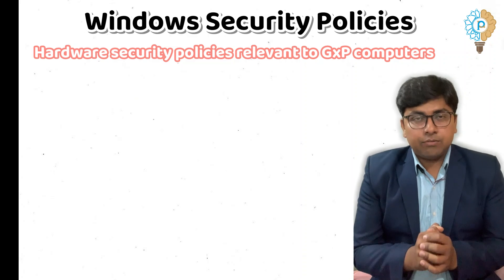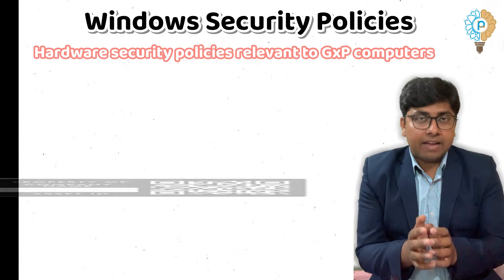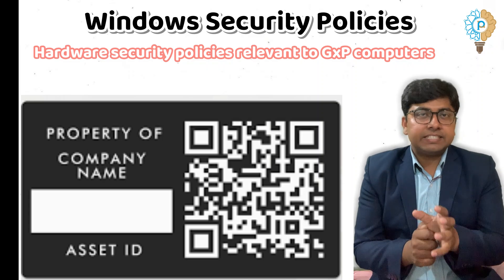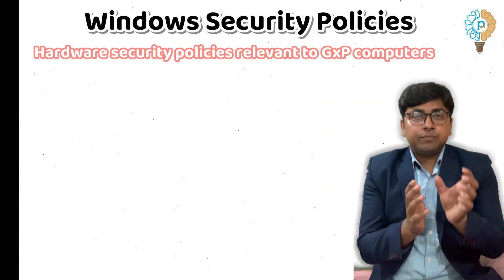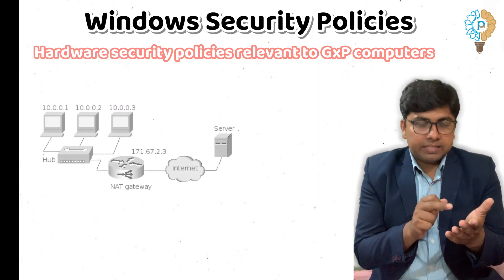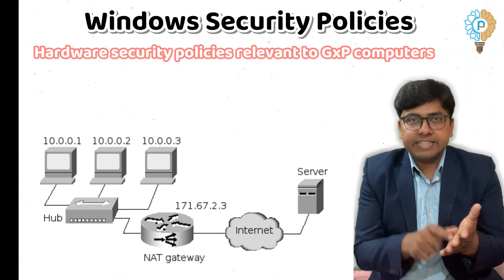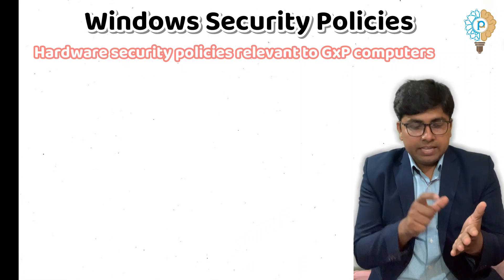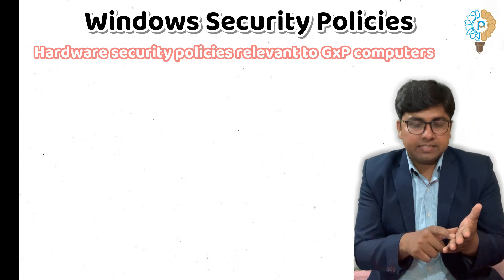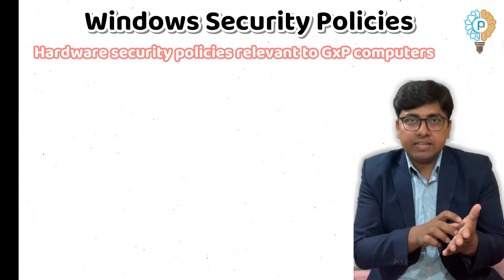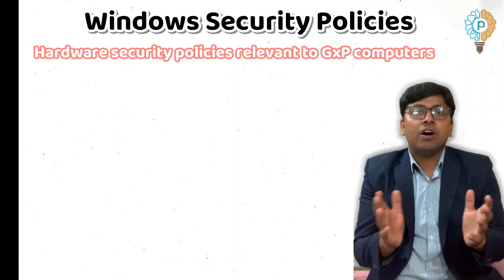To maintain traceability of hardware connected to the GXP computerized system, all hardware should have an asset code, from which you can easily track or identify the device connected to the system. You can also mention the IP address of the network device, as well as the asset code or a specific system identification number on its tag. For compliance, each system shall be connected with dedicated external devices, which shall be mentioned on the tag.